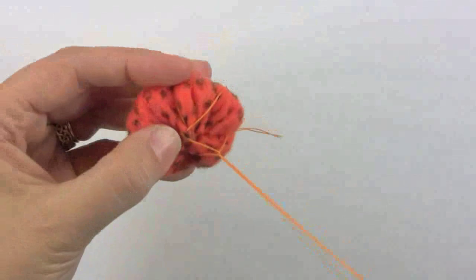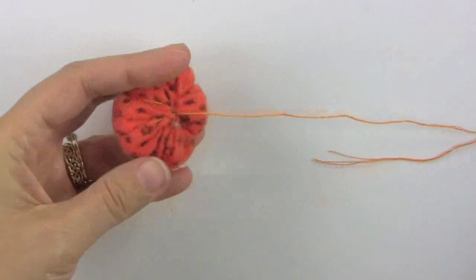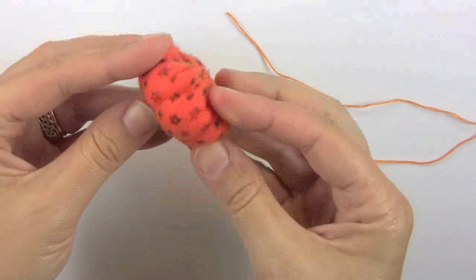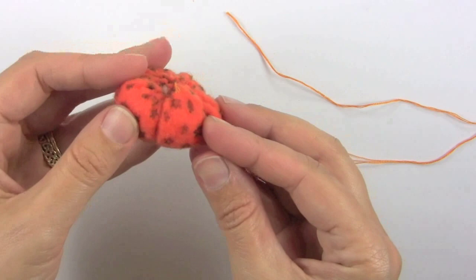I'll make a little knot in here just by putting the needle through and then putting the needle back through the loop again. Then I can go ahead and trim that off. There is the pumpkin without the stem and the leaf, so let's do that next.